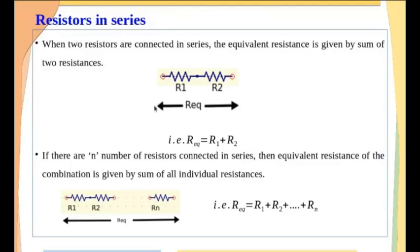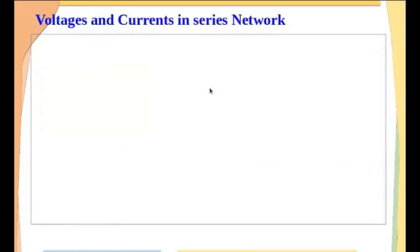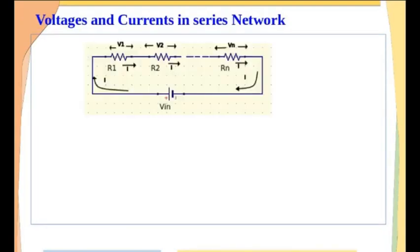There will be same current flowing through each of the resistances connected in series. If the main current is I, the same current will flow through all the resistors in a series network. As for voltages — whatever the applied voltage is across the series network, it will be divided between all the resistors. V1 part of Vin will appear across R1, V2 part across R2, and so on to Vn part across Rn.